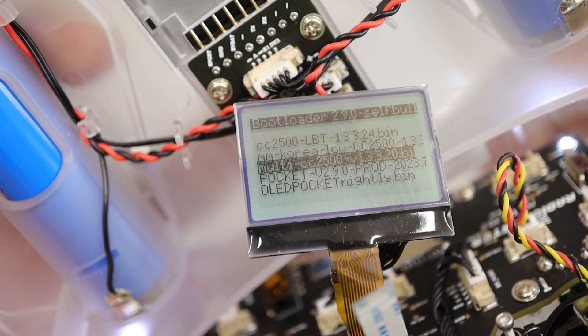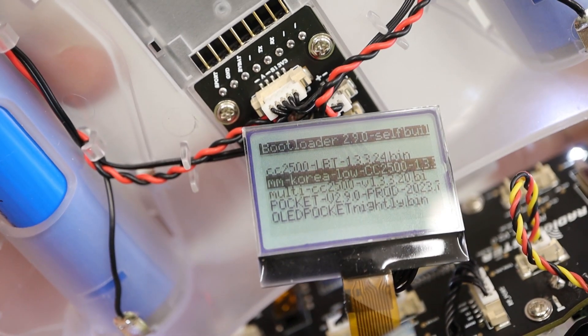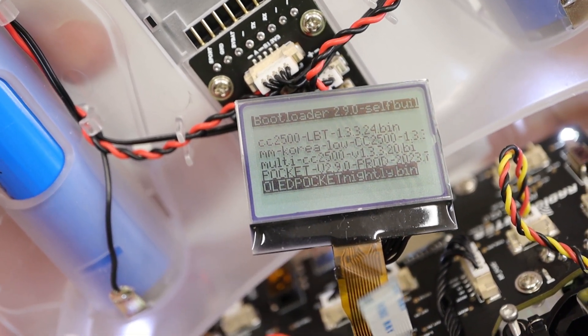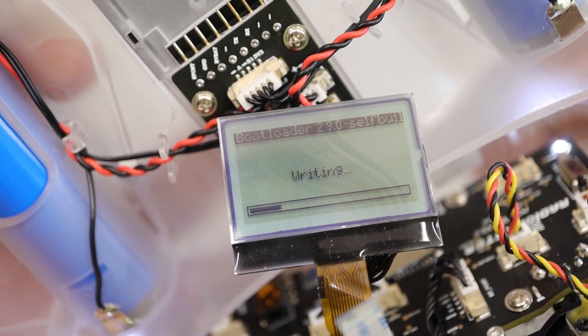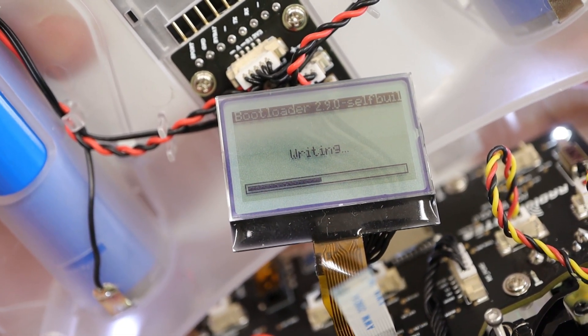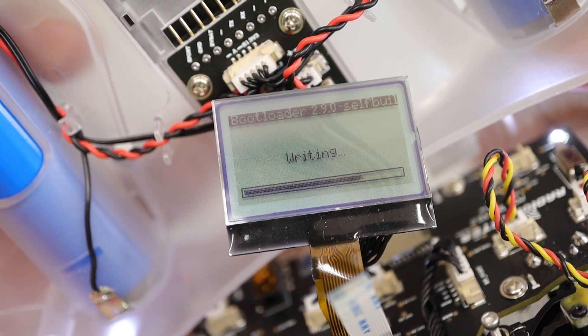To flash new firmware, connect original LCD and enter bootloader. Choose new firmware and flash it and turn off the radio. Finalize the assembly. Don't forget bootloader pressing.